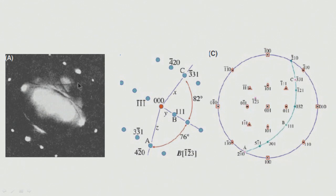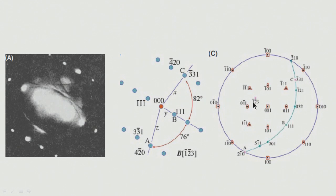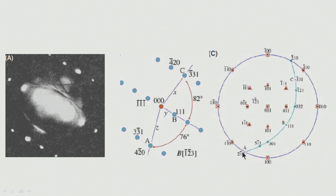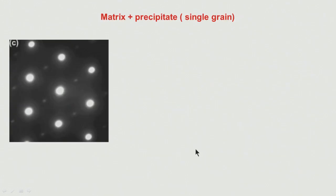This is another example where tilting has been done to a 1̄1̄23 zone axis direction. Using the stereogram, the great circle corresponding to this pole is identified, and the reflections lying on it are indexed using structure factor rules, giving a consistently indexed pattern.